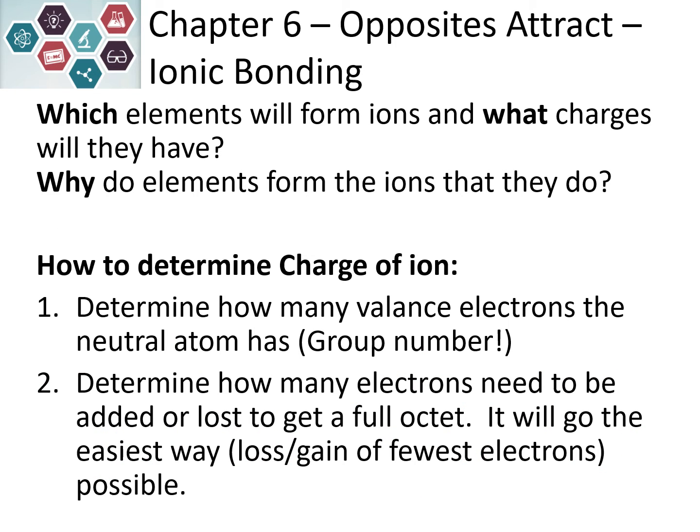So how do we determine the charge of the ion? We look at how many valence electrons the neutral atom has, which we can find based on its group number on the periodic table, and figure out how many electrons need to be added or lost to get to a full octet. If it's a metal, it's going to lose electrons. If it is a nonmetal, it's going to gain electrons, because they want to go the easiest way. Nonmetals have more valence electrons, so they want to gain a couple to reach eight.